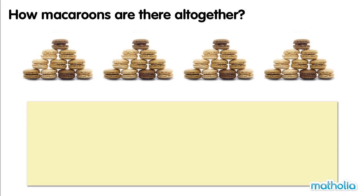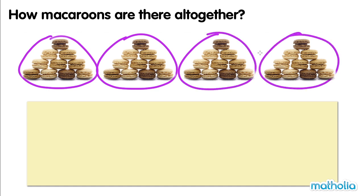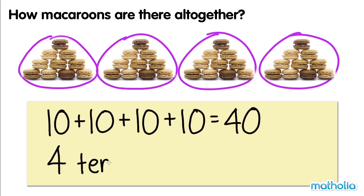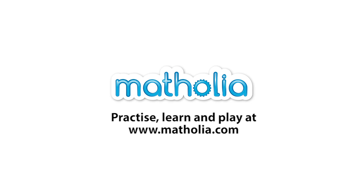How many macaroons are there altogether? There are four groups of macaroons. Each group has ten macaroons. Ten plus ten plus ten plus ten equals forty. Four tens are forty. Thank you.